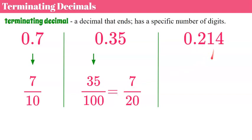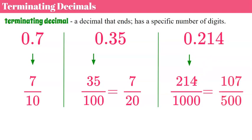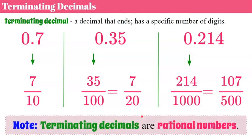0.214, or 214 thousandths. Both numerator and denominator are divisible by 2 — they're both even. Divide by 2 and you get 107 over 500. So 214 thousandths as a decimal in simplest form as a fraction is 107 over 500. Something to note here that will become important later on in our playlist.